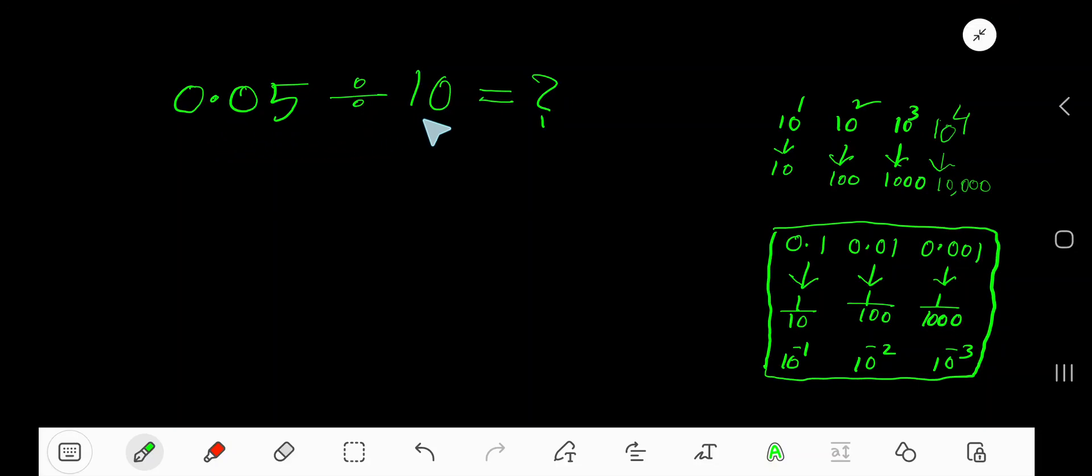0.05 divided by 10. 0.05 divided by 10 equals what? Here, 10 is a divisor: ten, hundred, thousand, ten thousand. These are called powers of 10. To divide a decimal by a power of 10, just...